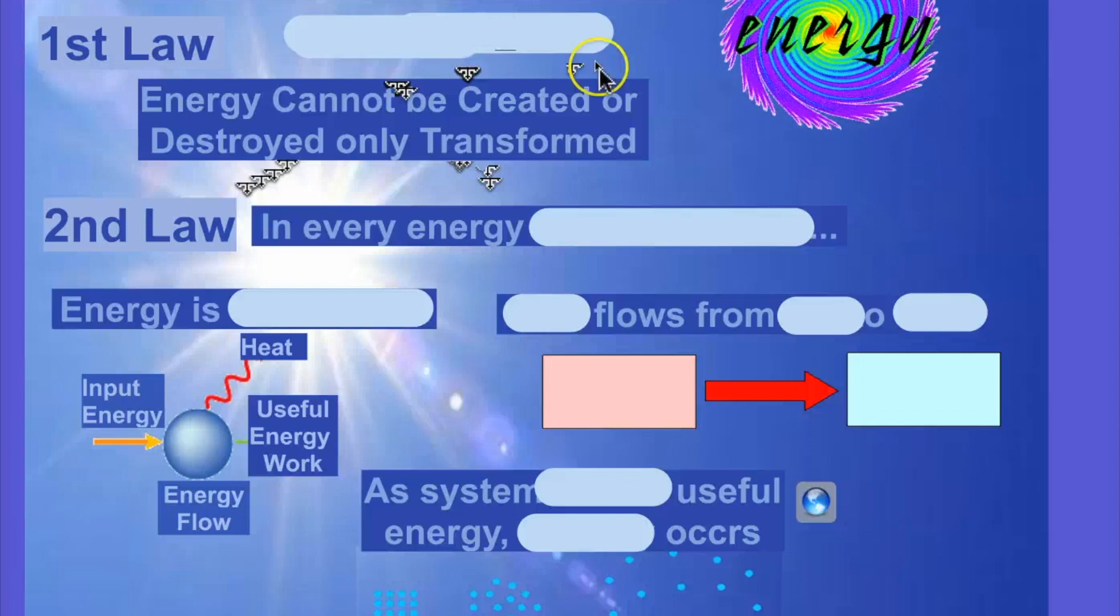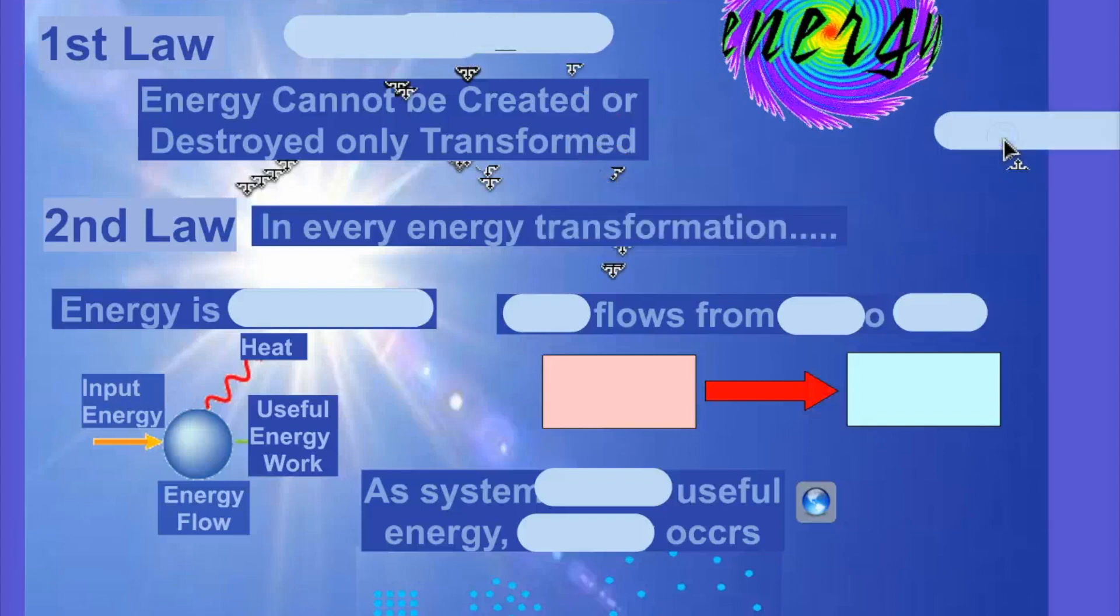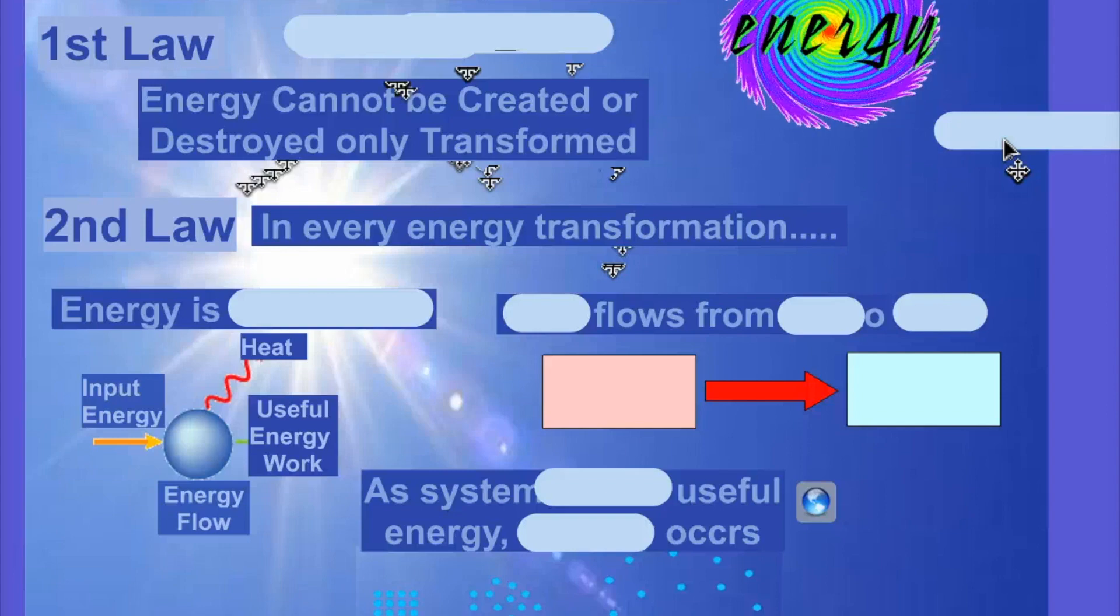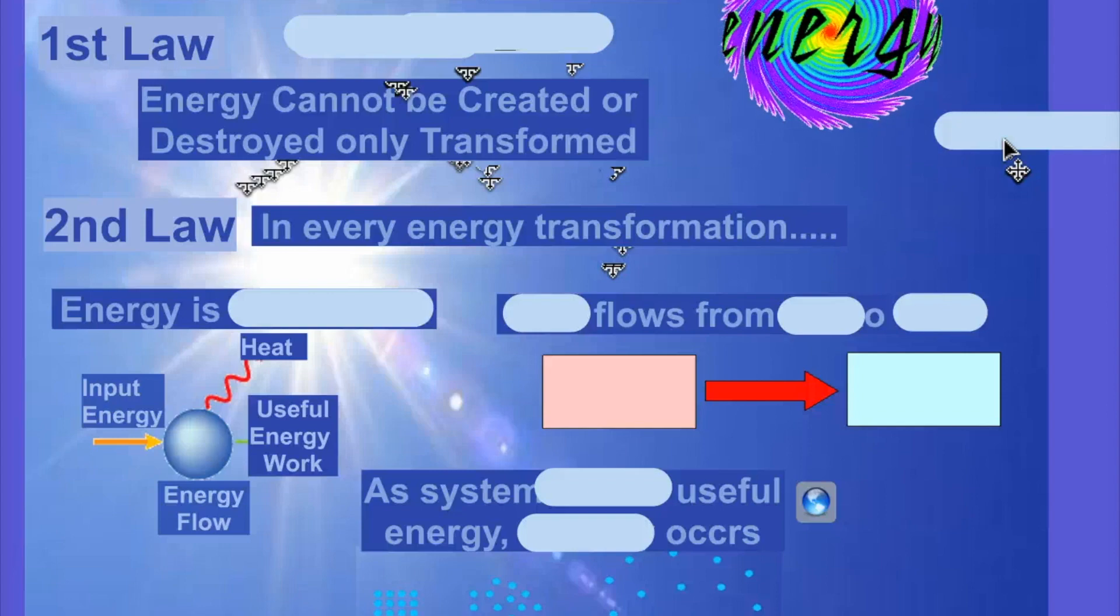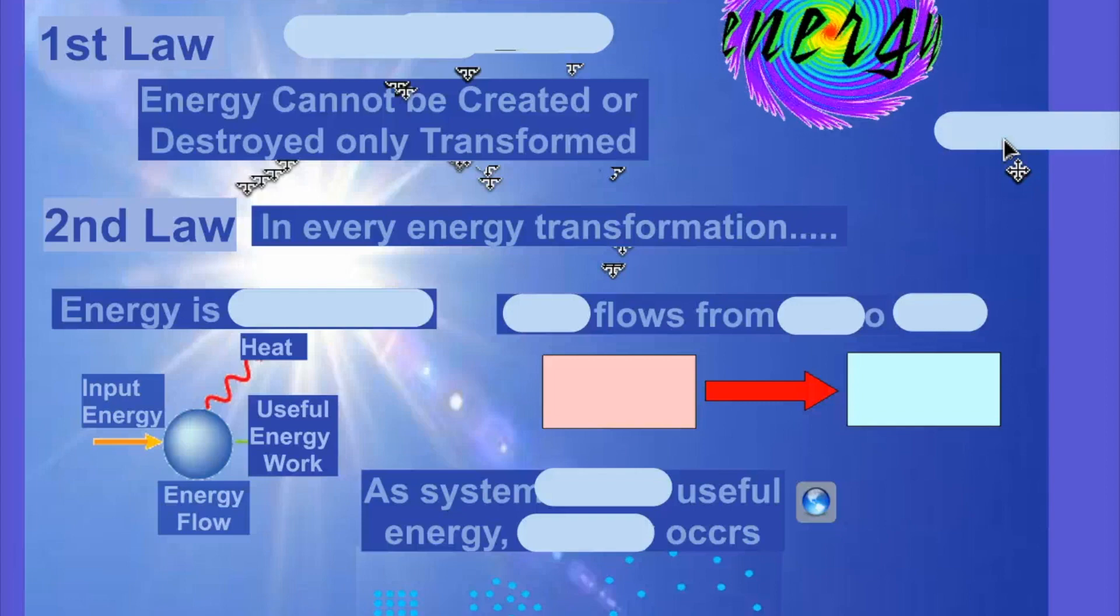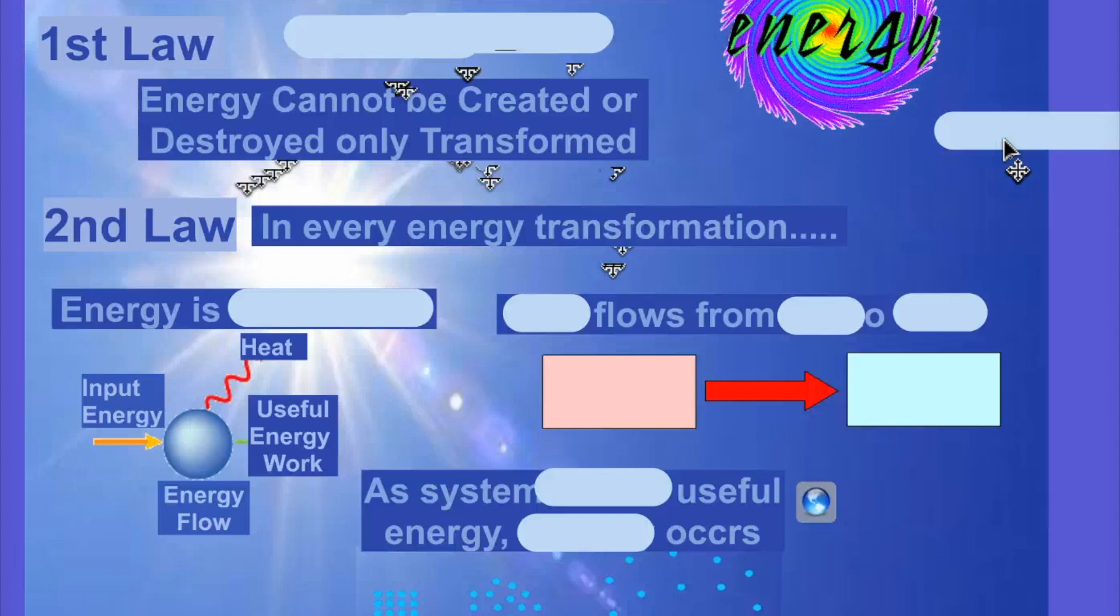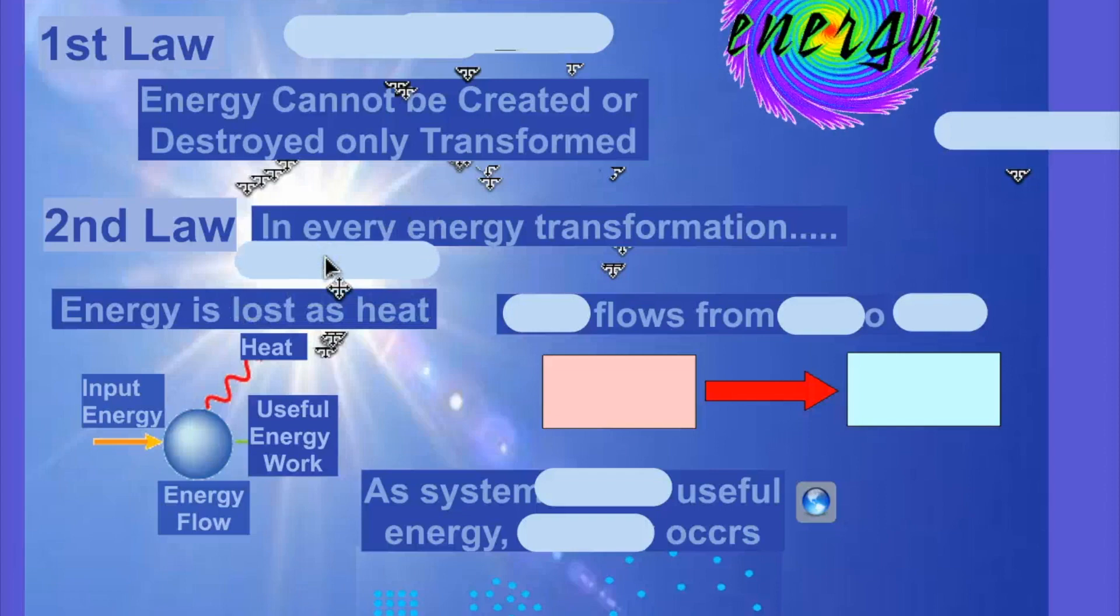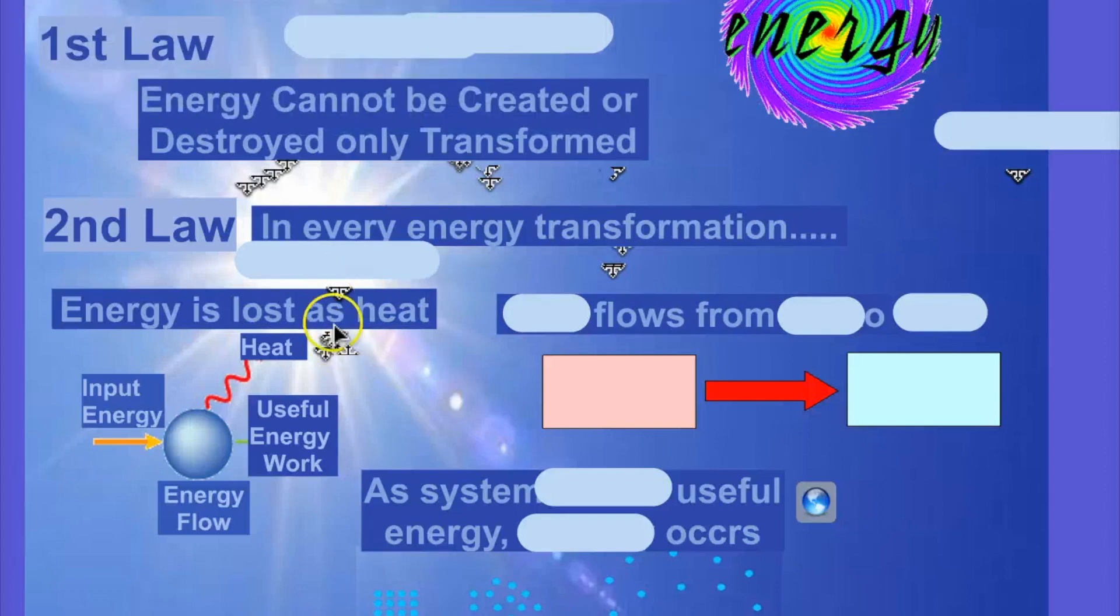So, the second law says, every time energy transfers, three things happen. And if you look at the pictures, it can kind of guide you. Every time energy transfers, energy can't be created or destroyed, only transferred. Every time it transfers, what happens? It loses some. Energy is going to get lost, and it's going to get lost in the form of heat energy. Lost as heat. Energy is lost as heat.